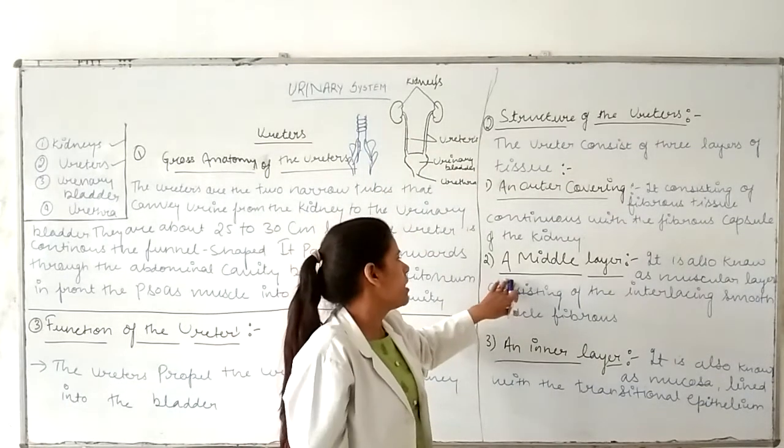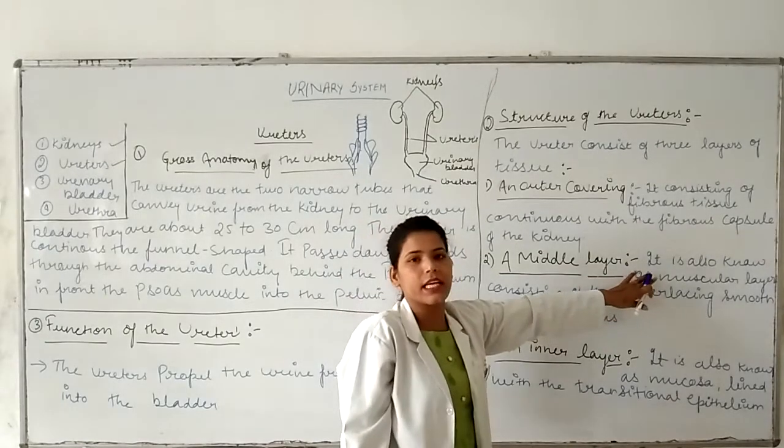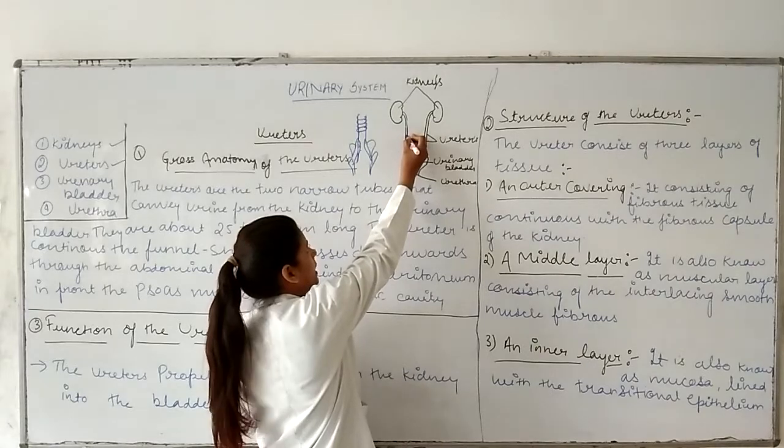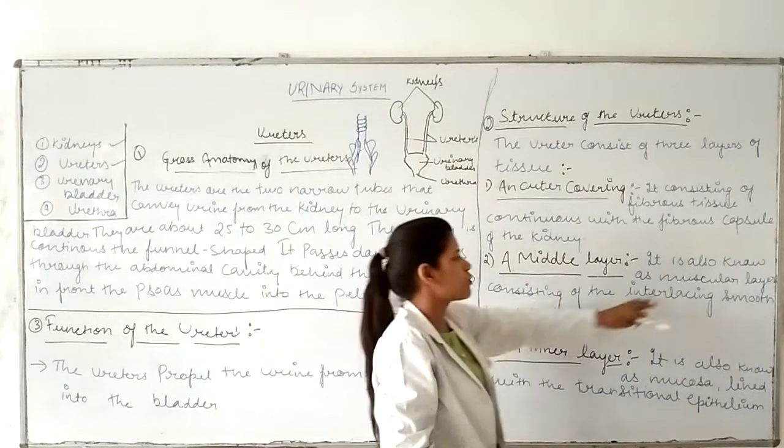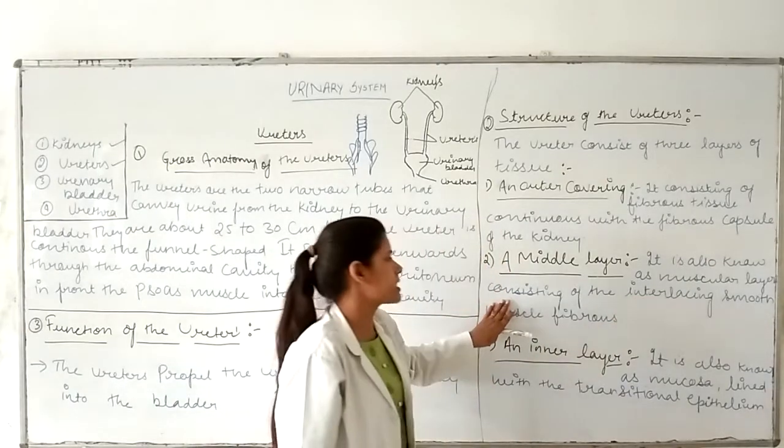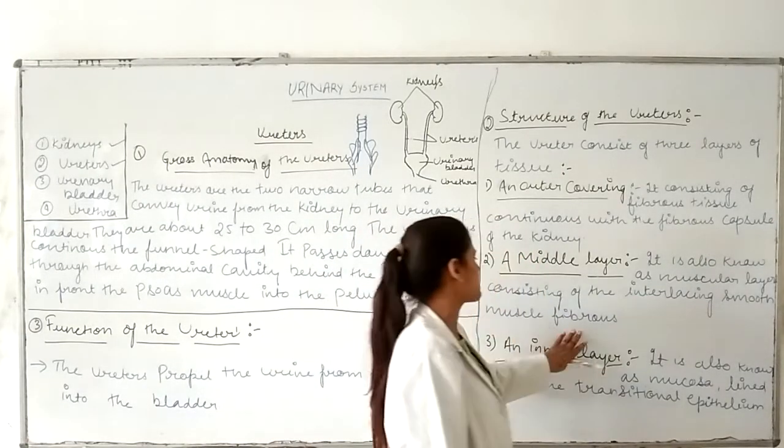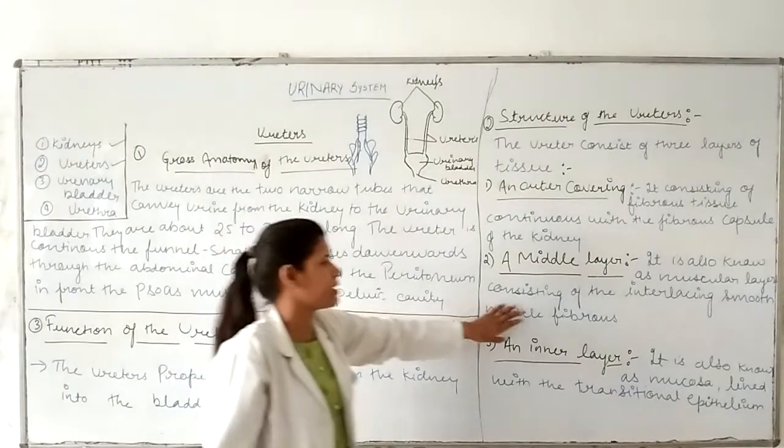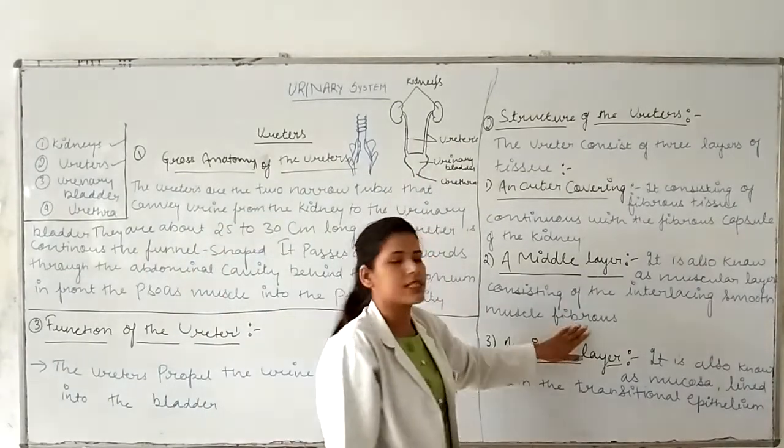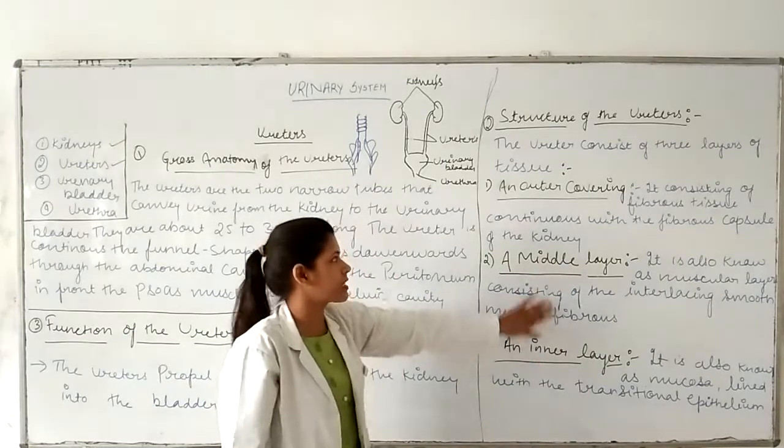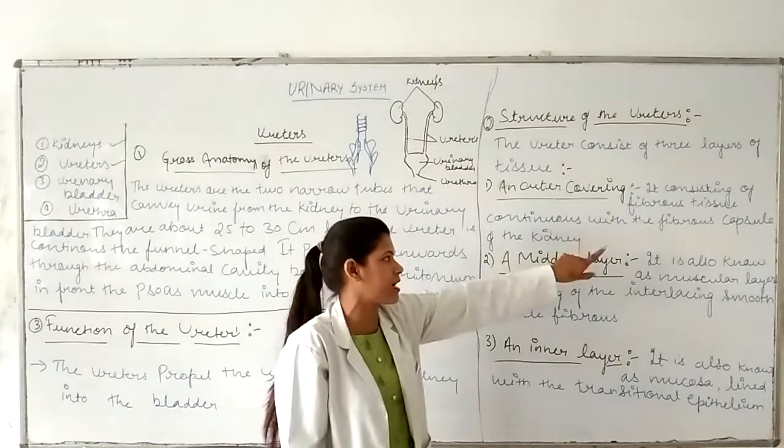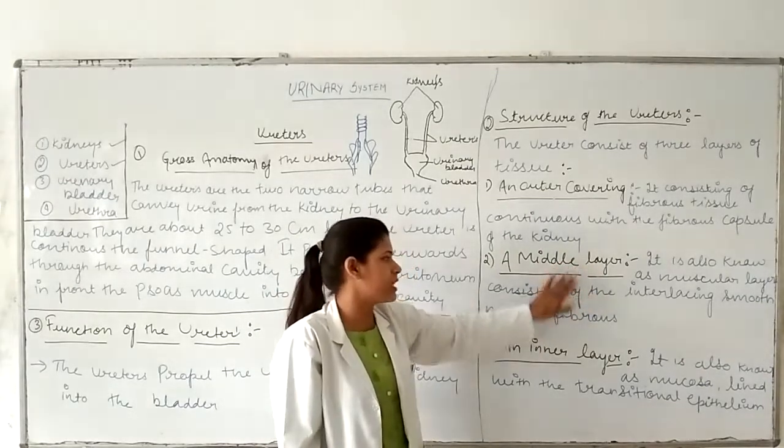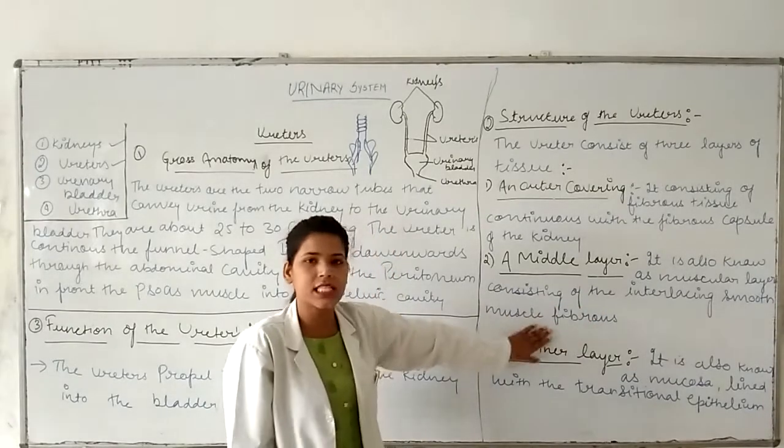The second layer is the middle layer, which is the muscular layer. This muscular layer contains smooth muscle fibers. This is called the muscularis, which contains smooth muscle fibers.